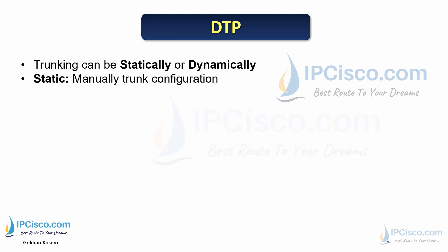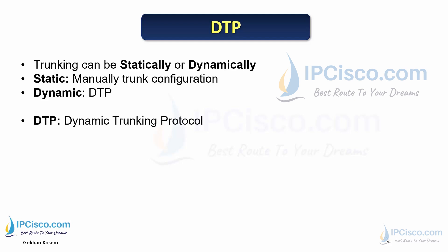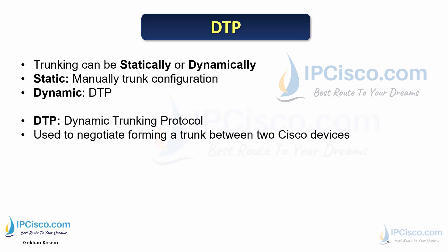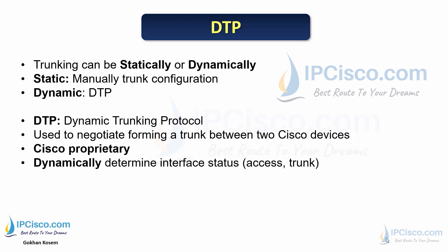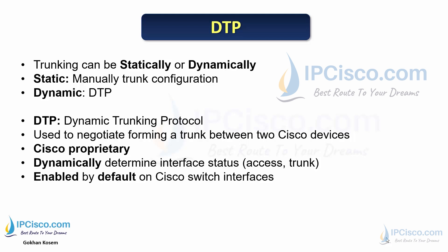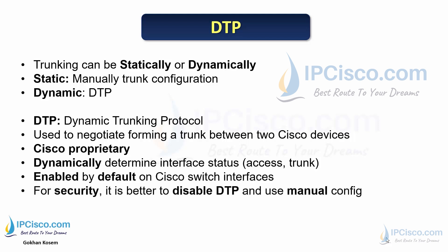Trunking can be configured statically or dynamically. The static way is manual trunk configuration. The dynamic way uses DTP, Dynamic Trunking Protocol, which negotiates forming a trunk between two Cisco devices. DTP is a Cisco proprietary protocol that determines the interface status dynamically. By default, DTP is enabled on Cisco switches. For network security, it is good to disable DTP and use manual trunk configuration.